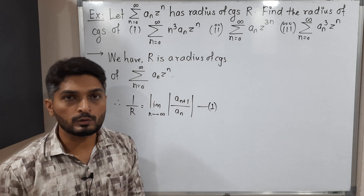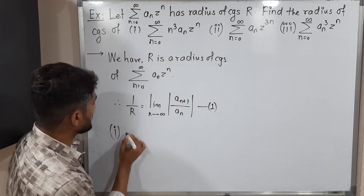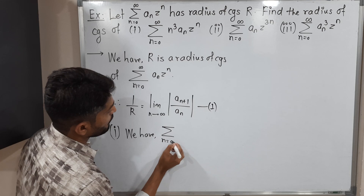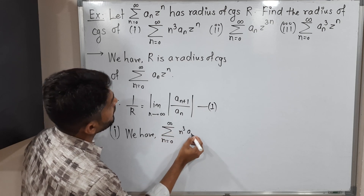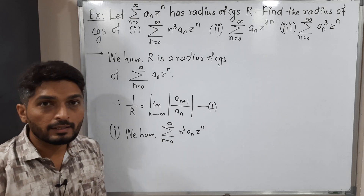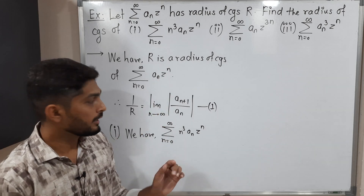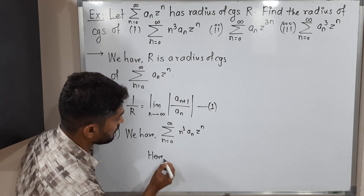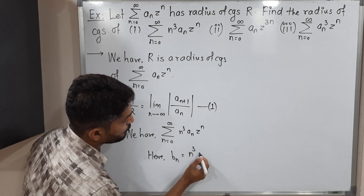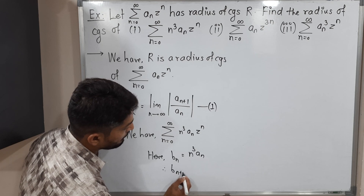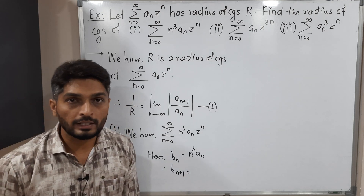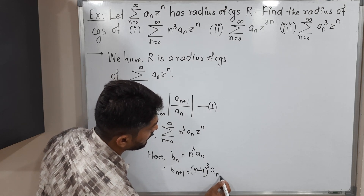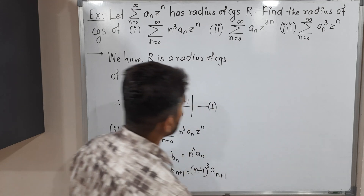Now let us discuss all three series one by one. The first series is summation n from 0 to infinity, n³·aₙ·z raised to n. The standard form of a power series has coefficient term, so here the coefficient is n³·aₙ. Let us call it bₙ. So bₙ = n³·aₙ, and therefore b_{n+1} = (n+1)³·a_{n+1}, by replacing n with n+1.